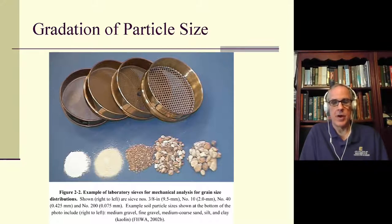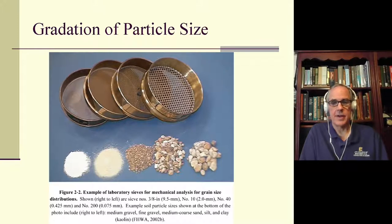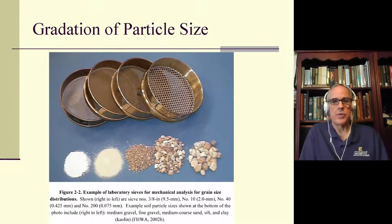For example, on the far right at the bottom is a medium gravel, then fine gravel, then medium coarse sand, then silt and finally clay. So we use these sieves to separate the different sizes of particles in the soil. I believe that in the lifetime of most of you taking this course, we will see this change.